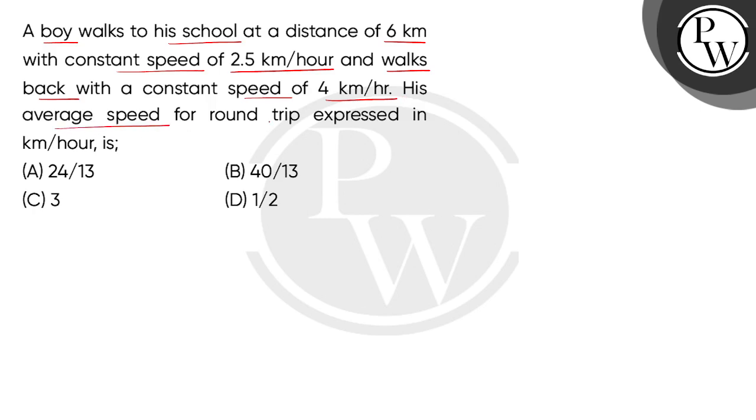His average speed for round trip expressed in km per hour is... So children, let's say this is the home of the boy and this is school. And the distance between both is 6 km, which we call S.